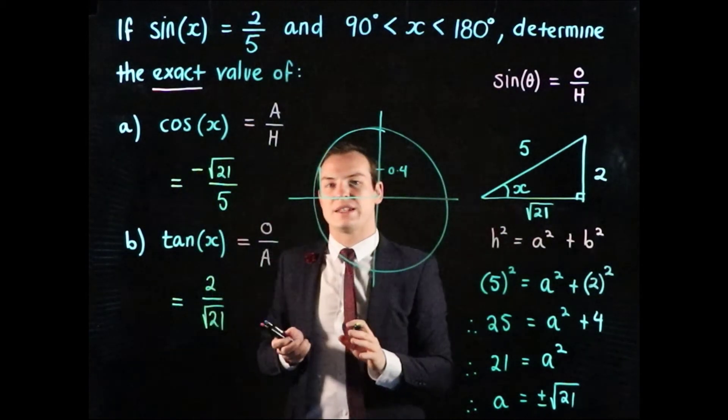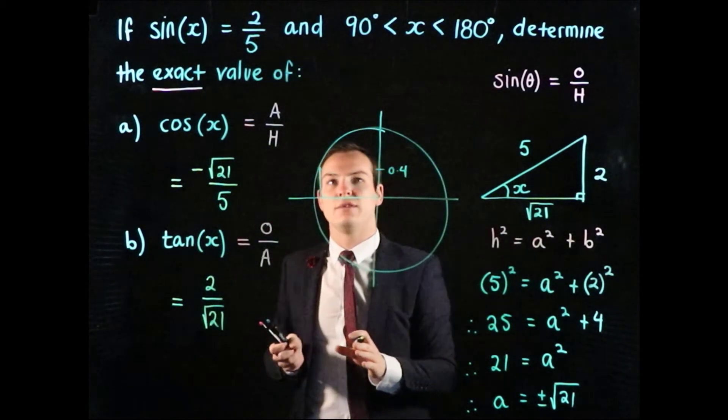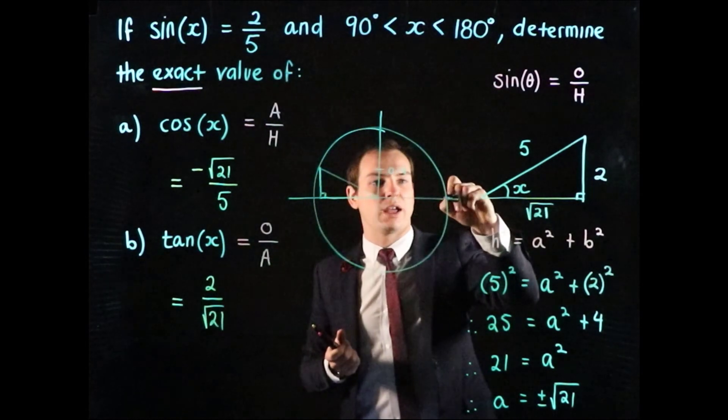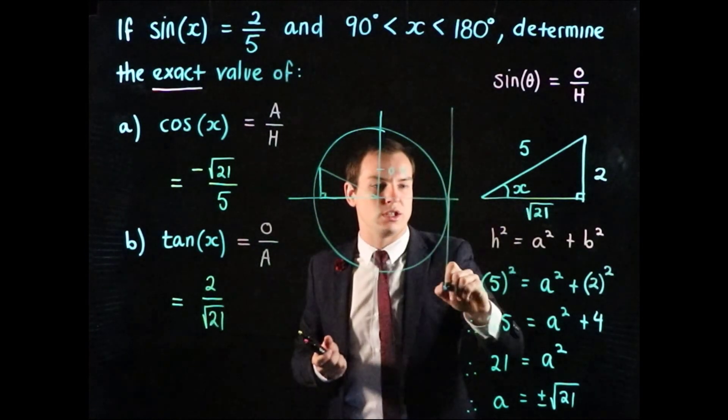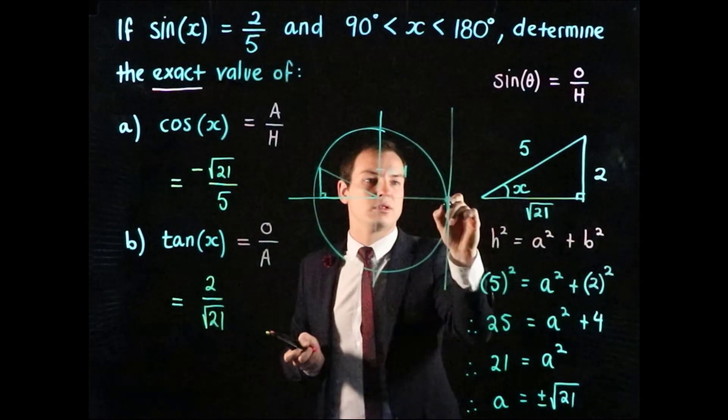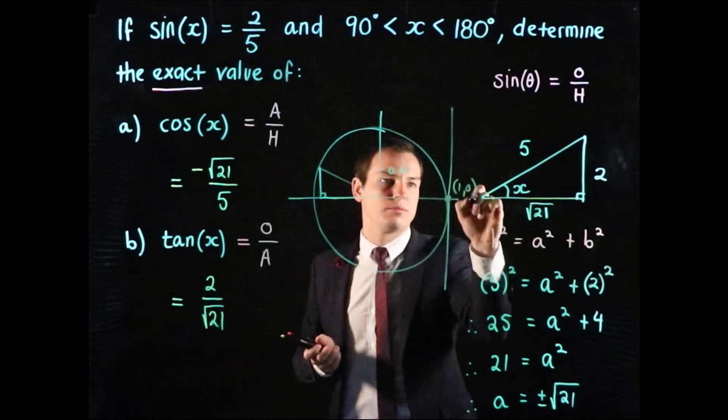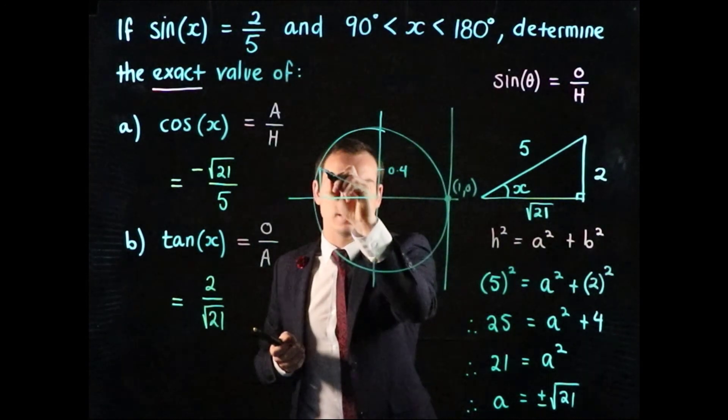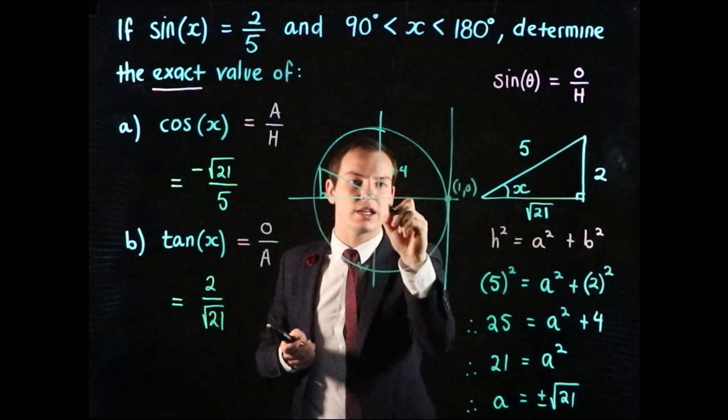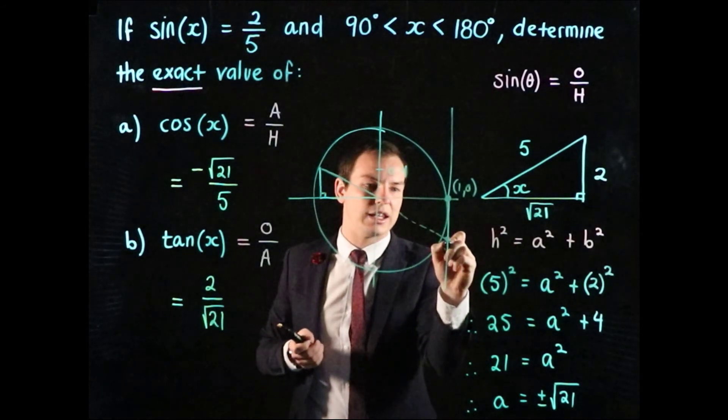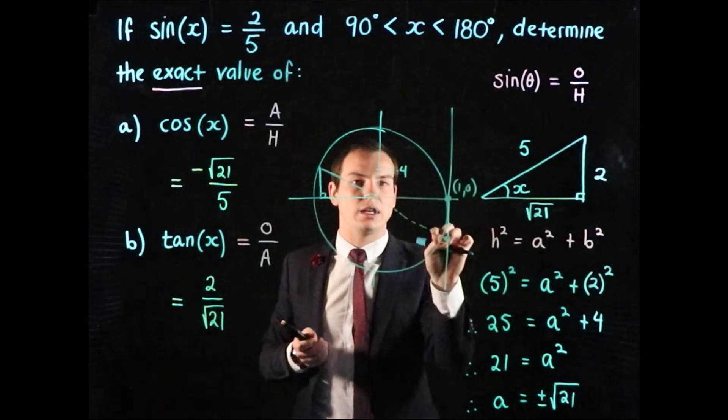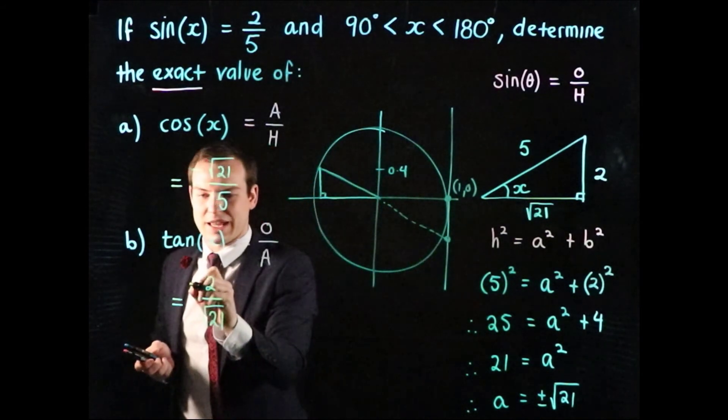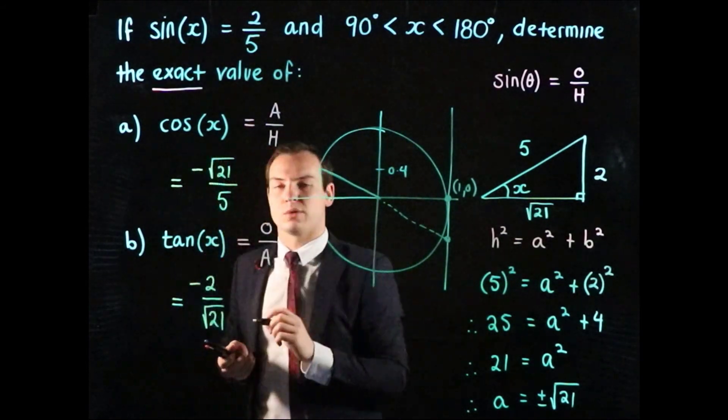We just need to decide whether tan is going to be positive or negative in this quadrant. The tangent value is read off a tangent line that we draw to the unit circle at the point 1, 0. To find the tangent value, we take this radius value and trace back through, and its value is somewhere down here which has a negative y value. So tan of x is going to be negative 2 on the square root of 21.